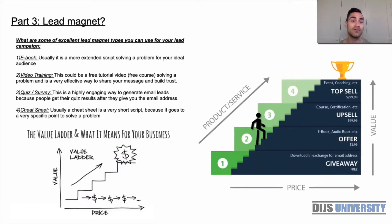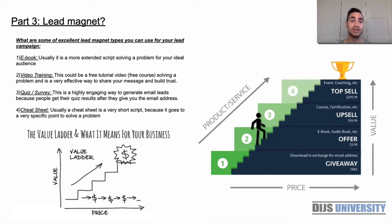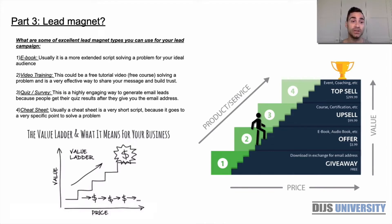Here we have four different options that you can choose from to create your lead magnet for your campaign. The first one is an ebook, which is the most commonly used — usually a more extended piece of content solving a problem for your ideal audience. The second one is video training, which could be a free tutorial or free course solving a problem, and is a very effective way to share your message and build trust in your brand.